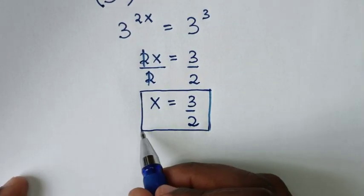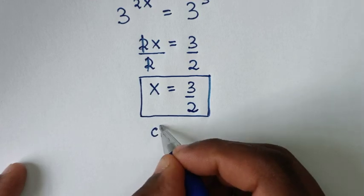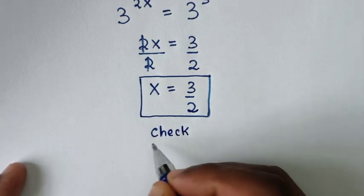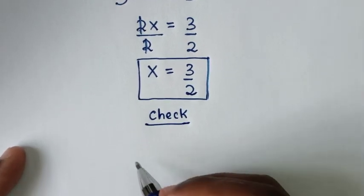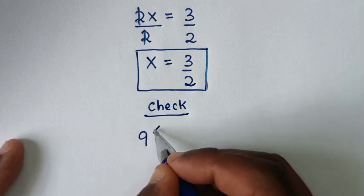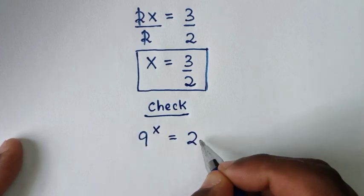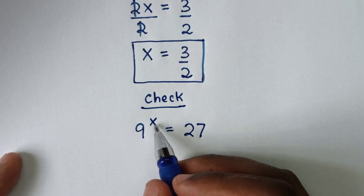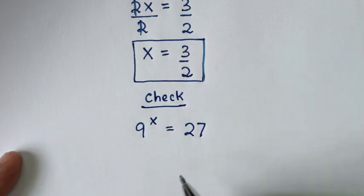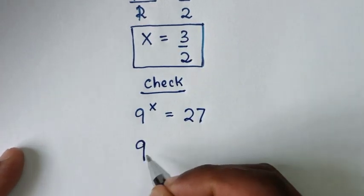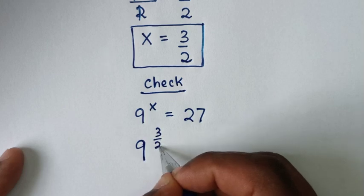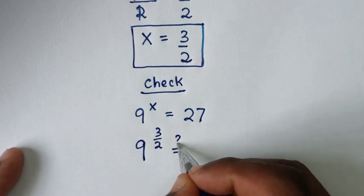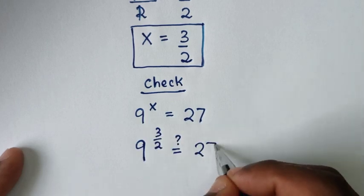Now let's check if this answer is correct to check from our problem which was 9 power x is equal to 27. Then we substitute this value of x which is 3 over 2. So it will be 9 power 3 over 2 is equal to this 27.